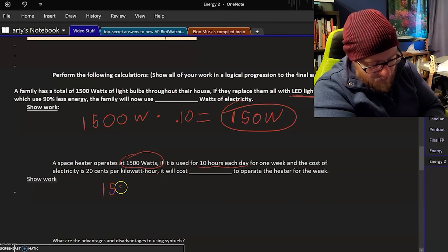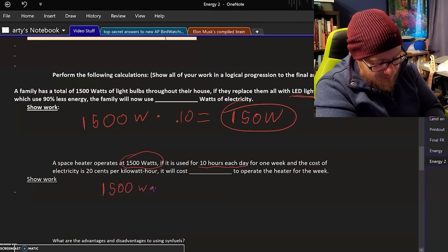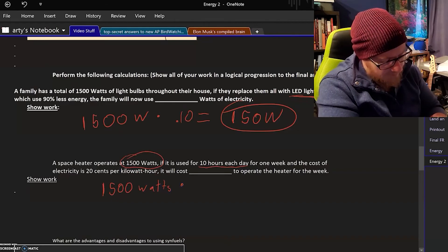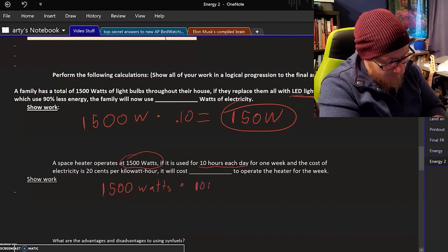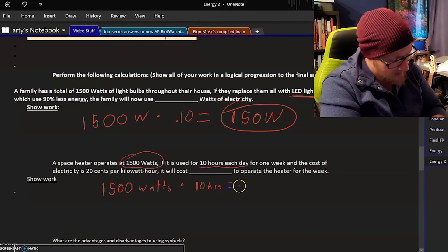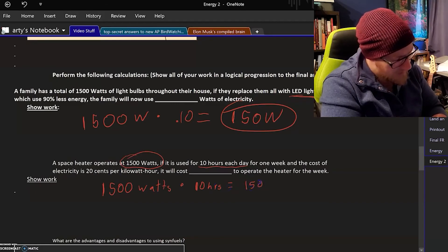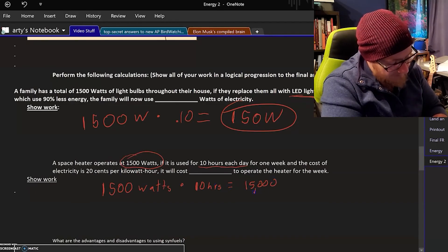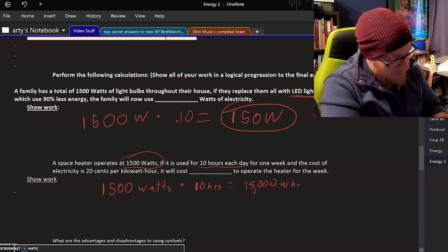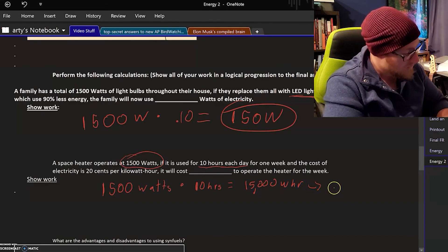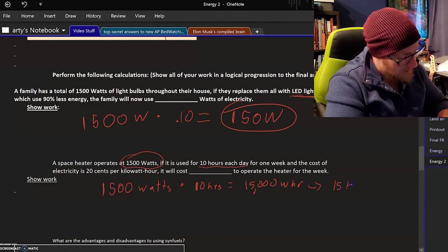So first we need to figure out how many kilowatt hours of electricity this thing actually utilizes. We've got something that is 1500 watts and it is operating for 10 hours, so we are using a total of 15,000 watt hours, which we can just divide by a thousand to get 15 kilowatt hours. So that's how much power this thing takes up.